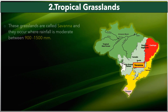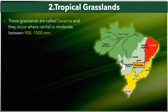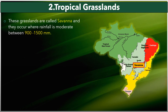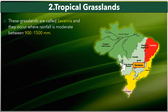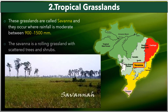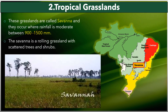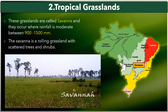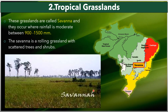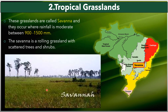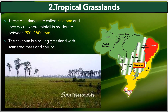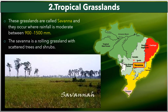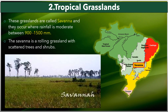The second type of forest in Brazil is tropical grasslands, called savannah. They occur where rainfall is moderate — approximately 900 to 1500 millimeters. The savannah is a rolling grassland with scattered trees and shrubs, as seen in the adjoining figure. Looking at the map, the savannah or tropical grassland lies to the south of the Amazon Basin, between 24 degrees south and 35 degrees south latitude.